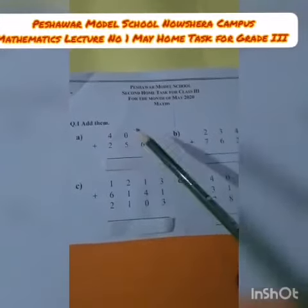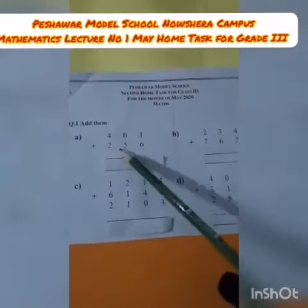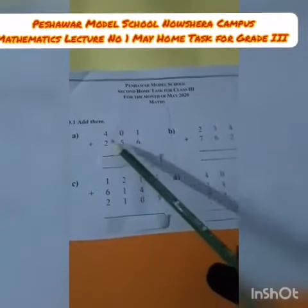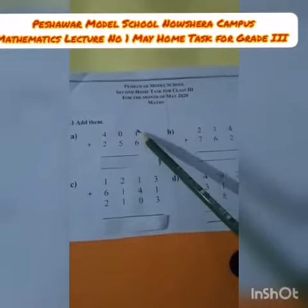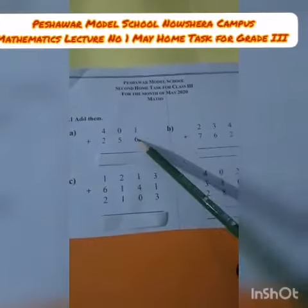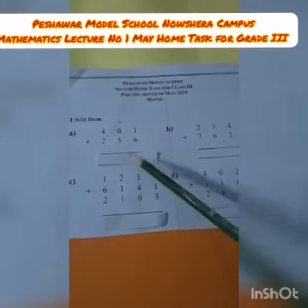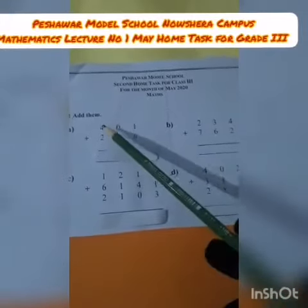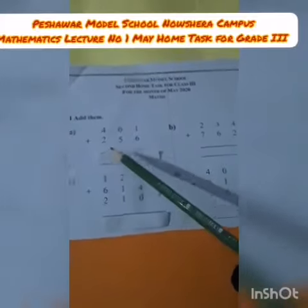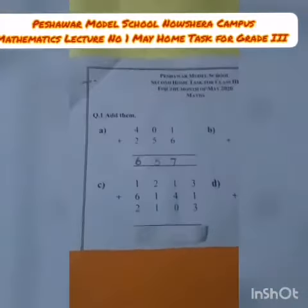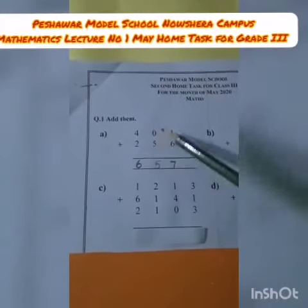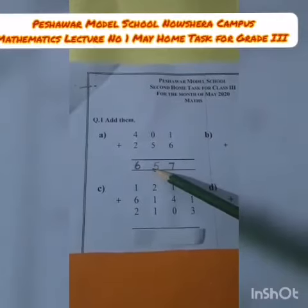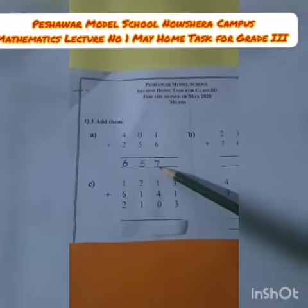We have two three-digit numbers: 401 plus 256. 1 plus 6 is equal to 7. 0 plus 5 is equal to 5. 4 plus 2 is equal to 6. The sum of these two numbers is equal to 657.